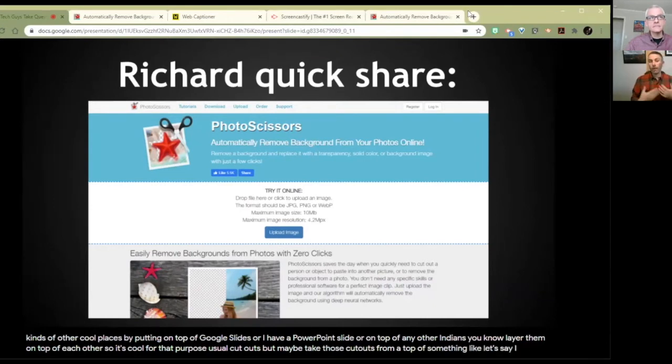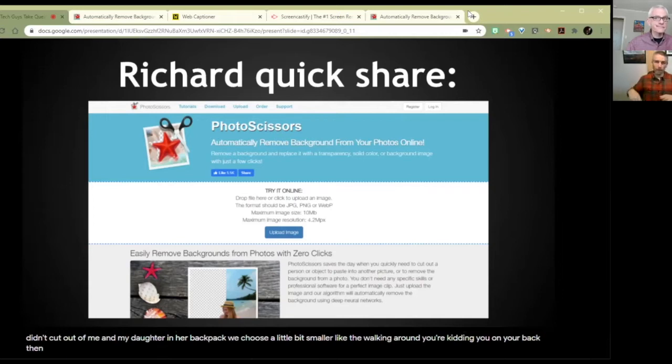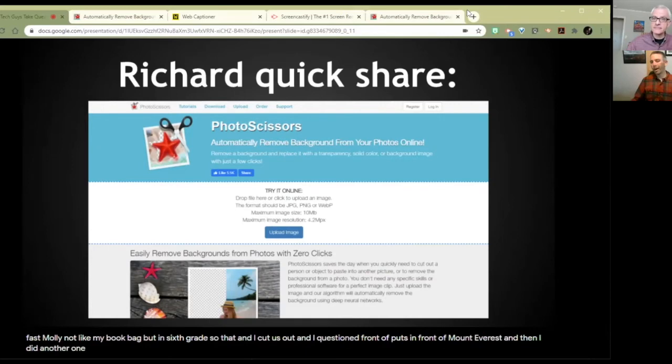So you can make cutouts of yourself or make cutouts of your cats, Rustin. Make cutouts of your cats because how often do you take pictures of your cats where there's nothing else in the background? So you take that tool, make a cutout of your cat, then you can put your cat into all kinds of other cool places by putting them on top of Google Slides or on top of a PowerPoint slide or on top of any other image. So it's cool for that purpose. You do these little cutouts, but then you take those cutouts, put them on top of something. Like, I did a cutout of me and my daughter in her backpack when she was a little bit smaller, like the walking around, you're kidding, you're on your back backpack. And I cut us out and I put us in front of Mount Everest. And then I did another one with my dog, with me and my dog and we were in front of Buckingham Palace.